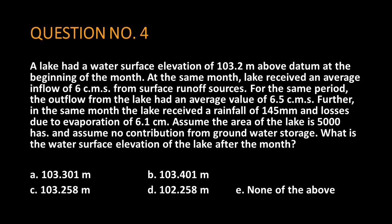Question number 4. A lake had a water surface elevation of 103.2 meters above datum at the beginning of the month. At the same month, the lake received an average inflow of 6 cubic meters per second from surface runoff sources.